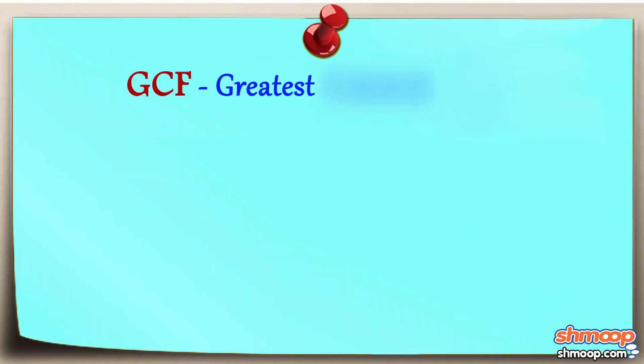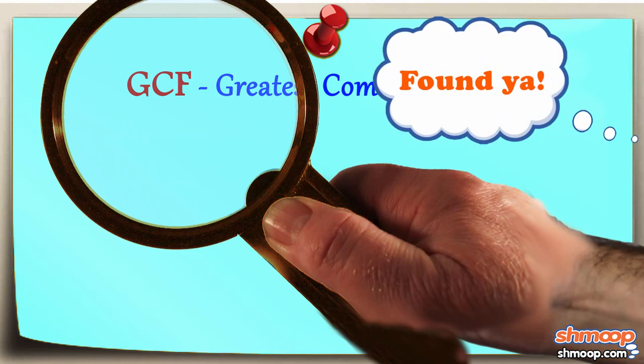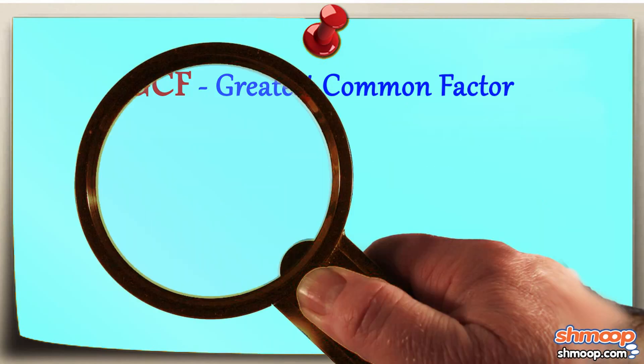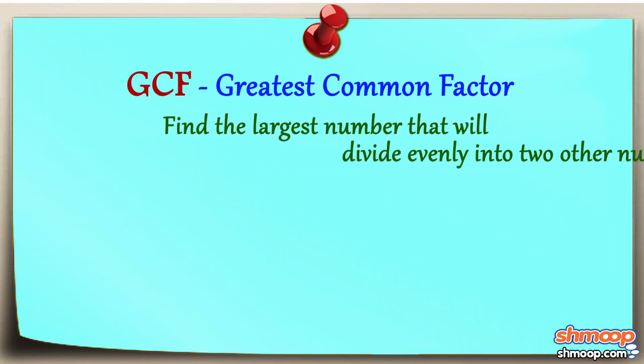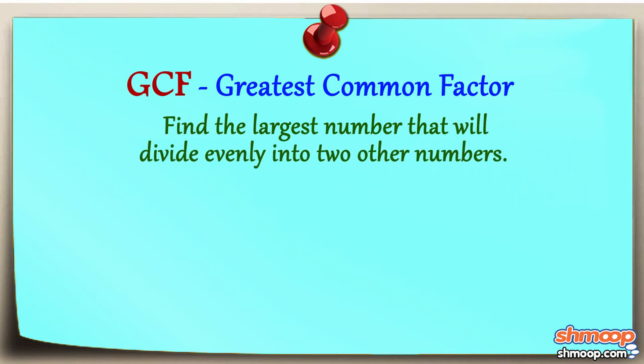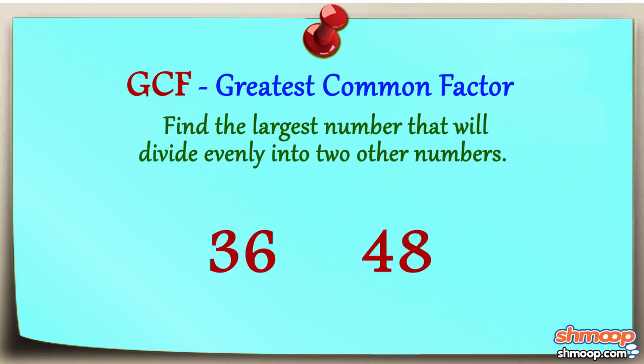GCF, or Greatest Common Factor, is basically the reverse. When looking for a GCF, you need to find the largest number that will divide evenly into two other numbers.